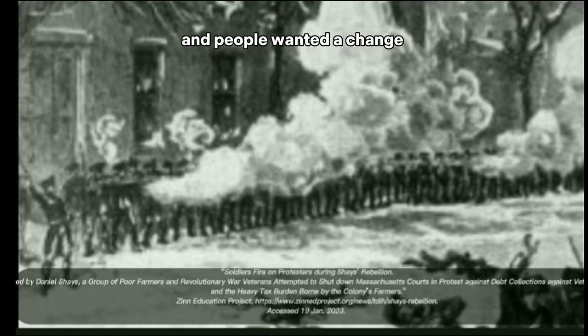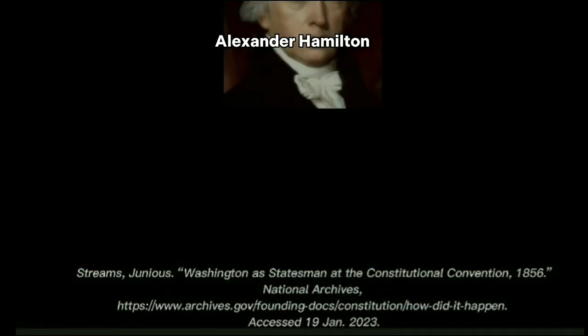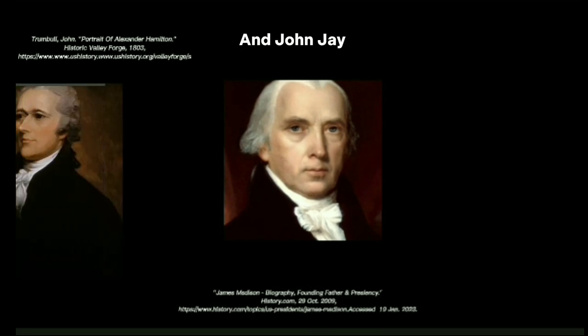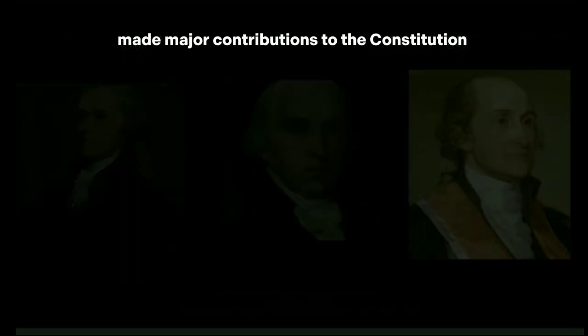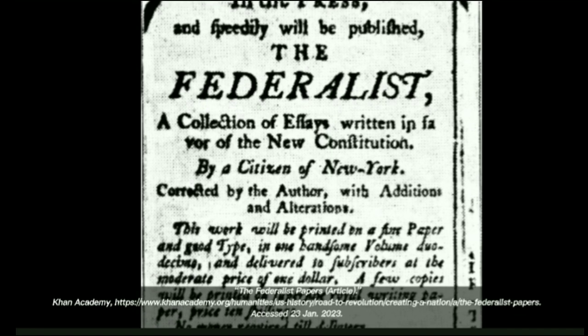Soon enough, there were riots due to a bad economic crisis, and people wanted a change which brought the Constitutional Convention. Alexander Hamilton, James Madison, and John Jay made major contributions to the Constitution by writing the Federalist Papers. John Jay wrote five, James Madison wrote 29, and Alexander Hamilton wrote 51, for a total of 85 papers. The papers were published anonymously under the name Publius. The articles urged people to sanction the Constitution and help citizens interpret and understand it.